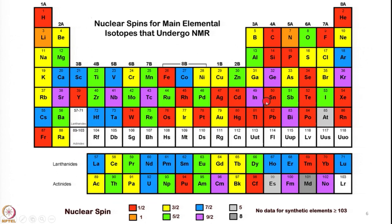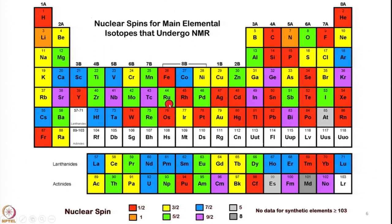In the periodic table, elements indicated in red have i = 1/2, those in yellow have i = 3/2, blue have i = 7/2, orange have i = 1 (lithium and nitrogen), green have i = 5/2, and purple/violet have i = 9/2. You can see that the majority of elements possess nuclei having NMR active i values. So what is nuclear spin? A nucleus with an odd atomic number or an odd mass number has a nuclear spin.